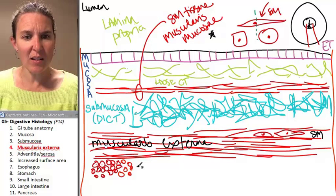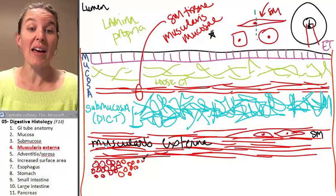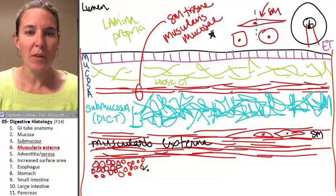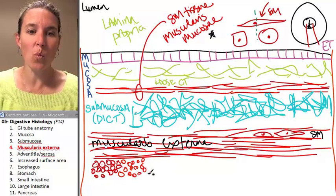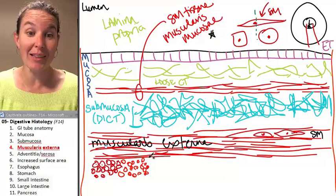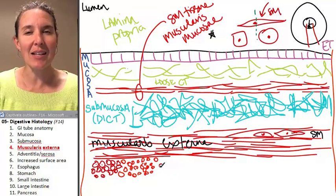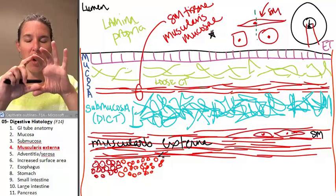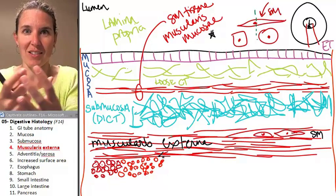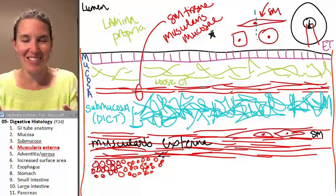So this just indicates that it's the same tissue type, but one part, one layer of muscularis externa has the cells oriented in a circular fashion around the tube. Do you see that?